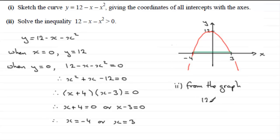12 minus x minus x squared is greater than 0 if x is in between, and we write that like that, in between minus 4 and 3. So that's the second part, and that was the first part.